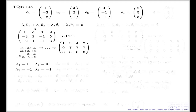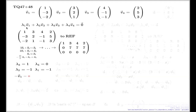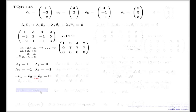Just out of curiosity, let me consider another choice. With the coefficients I found — λ1 = -1, λ2 = -1, λ3 = 1, λ4 = 0 — if I put them in front of my vectors, I get this linear combination of vectors, and we know the result is the zero vector.